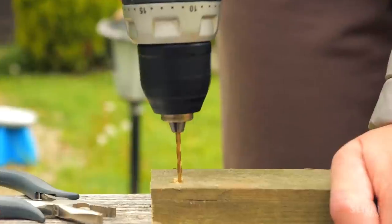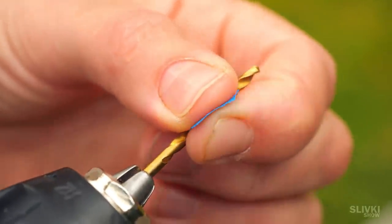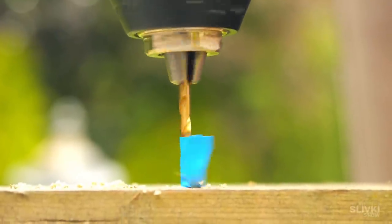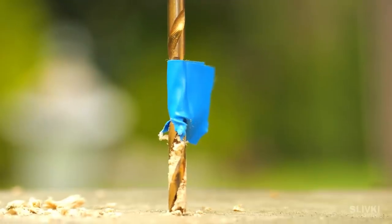Sometimes you have to drill a lot of holes with the same depth. You can of course use a piece of duct tape glued to the drill bit but it has a disadvantage. You push a little harder and the duct tape shifts or breaks off.